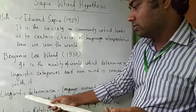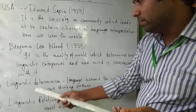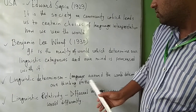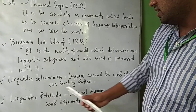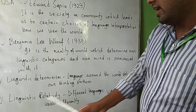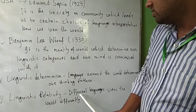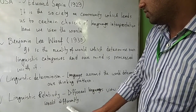So there are two concepts we should focus on: linguistic determinism — language around the world determines our thinking pattern — and linguistic relativity — that different languages view the world differently.